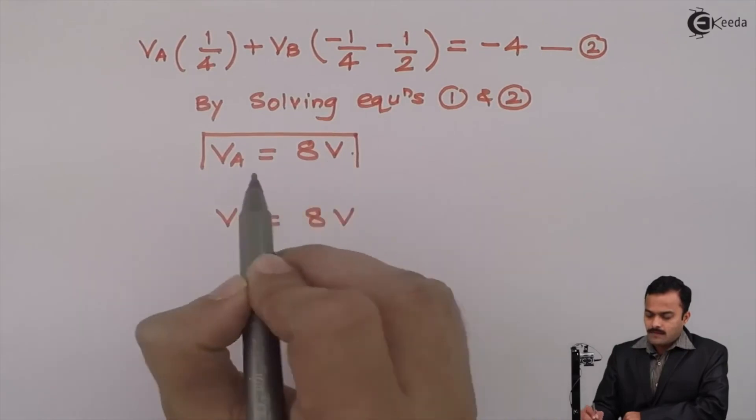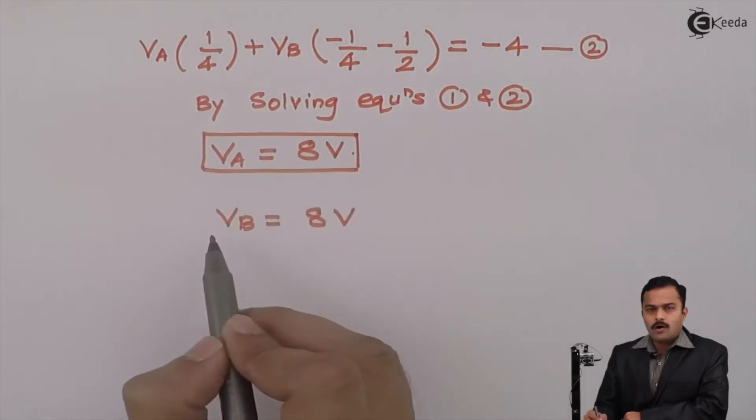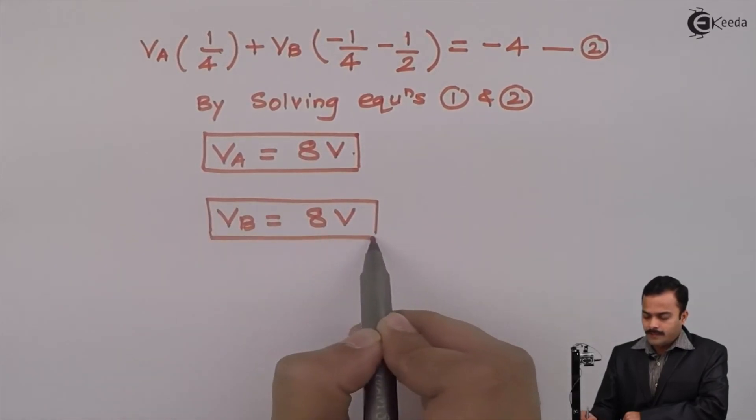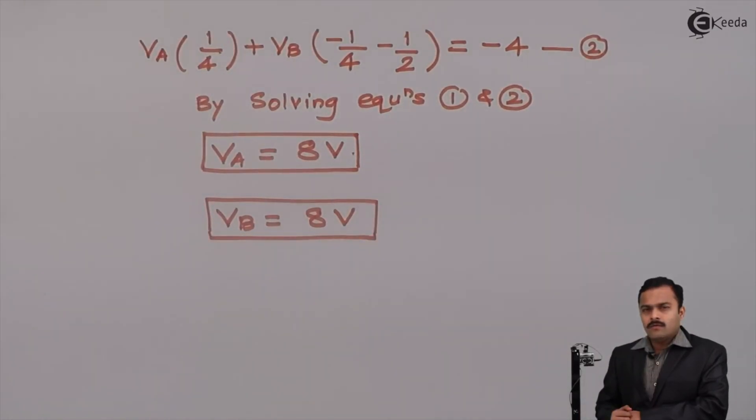So here we have taken a numerical having 2 current sources and 2 nodes. And by using nodal analysis which is the application of KCL we got node voltages of node A and node B. In subsequent videos we will solve more numericals to see this concept once again. Thank you.